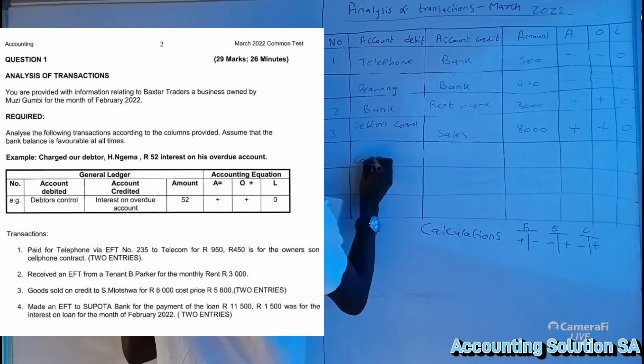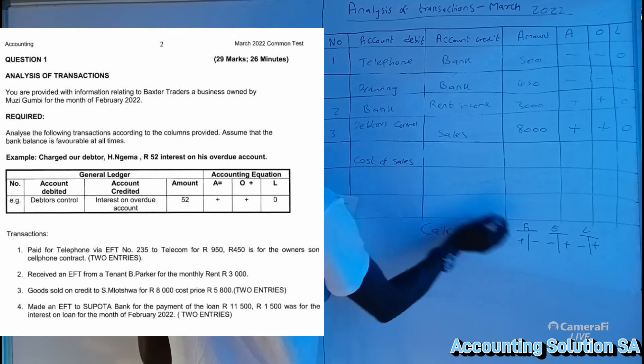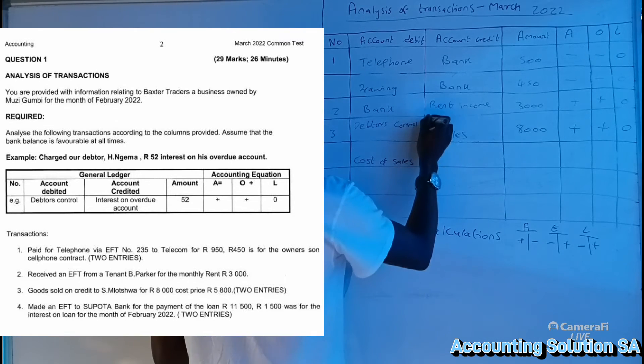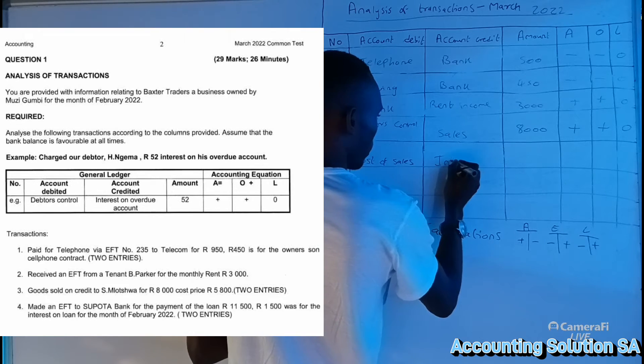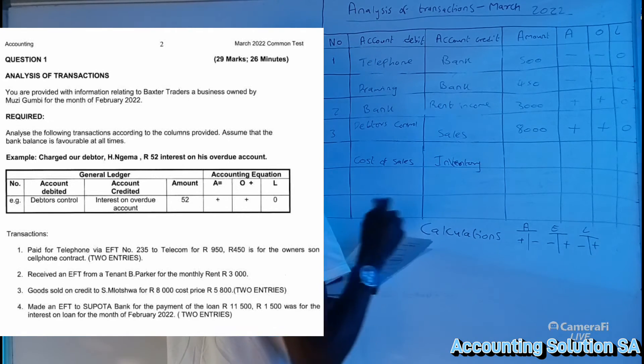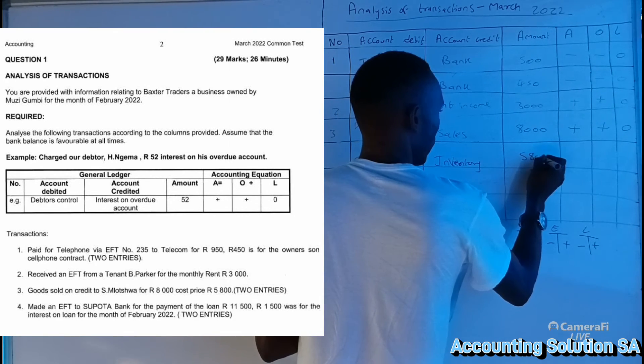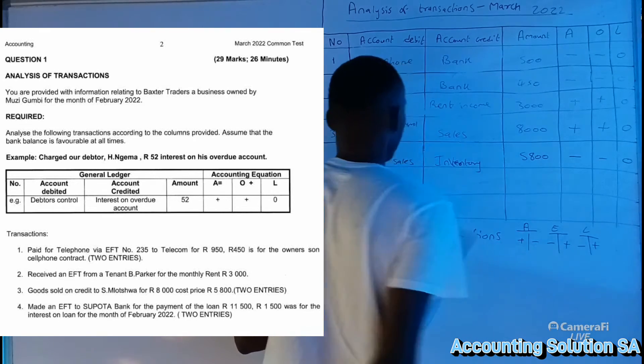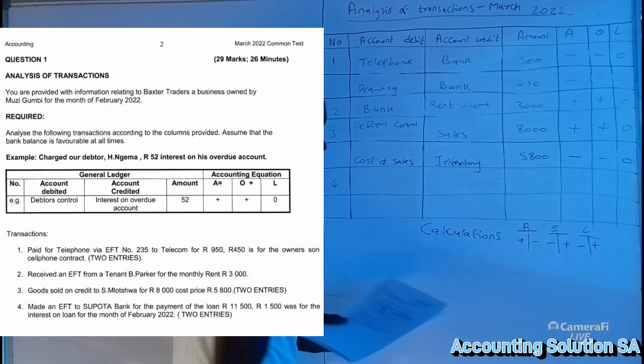Cost of sales is an expense, it goes with what? What did we sell? We sold inventory. Inventory, and the amount is 5,800. Inventory goes out, expense reduces equity just like that. Number four, very simple. Very, very simple. If you master the other questions as well, you are going to make it.